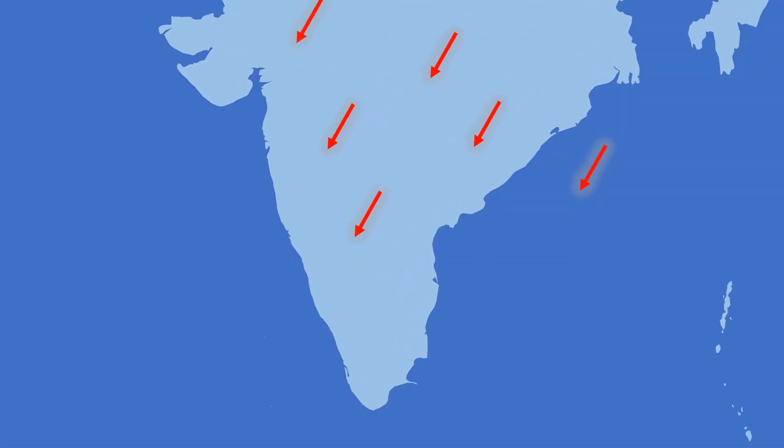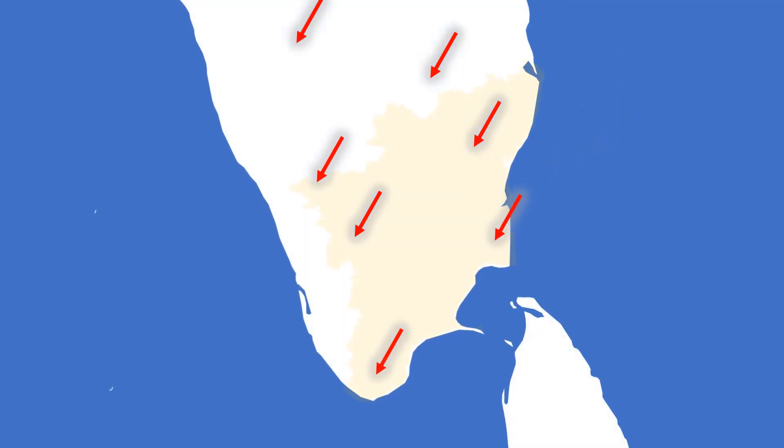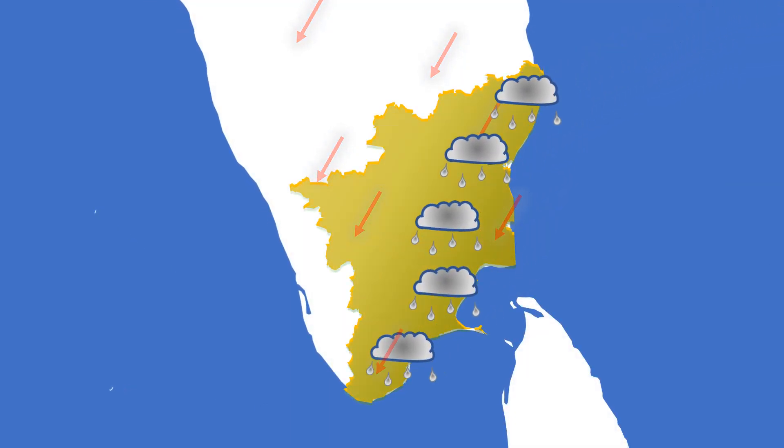These winds, when they reach Tamil Nadu, will be carrying with them the moisture from the Bay of Bengal. Tamil Nadu will experience heavy rains. In fact, half of its annual rainfall is received from these monsoons, and it lasts till mid-December.